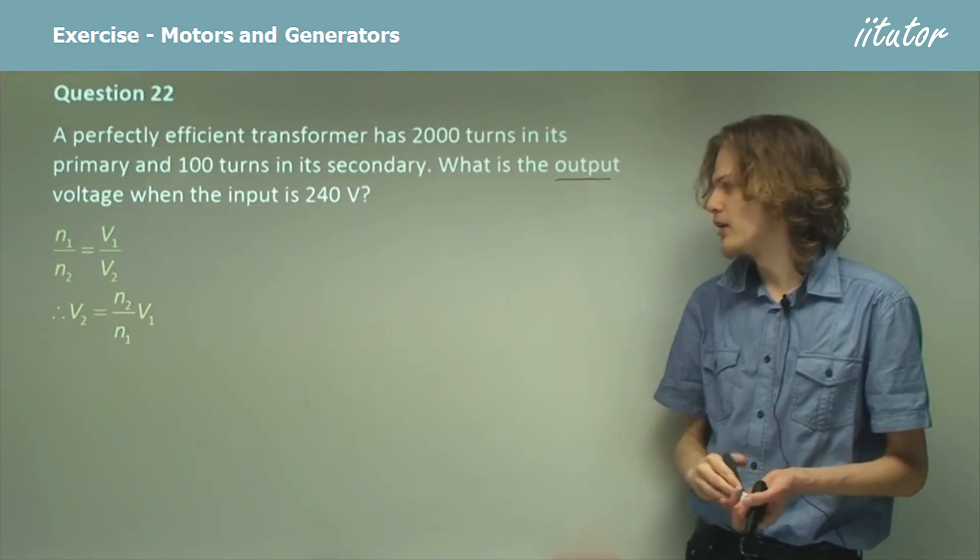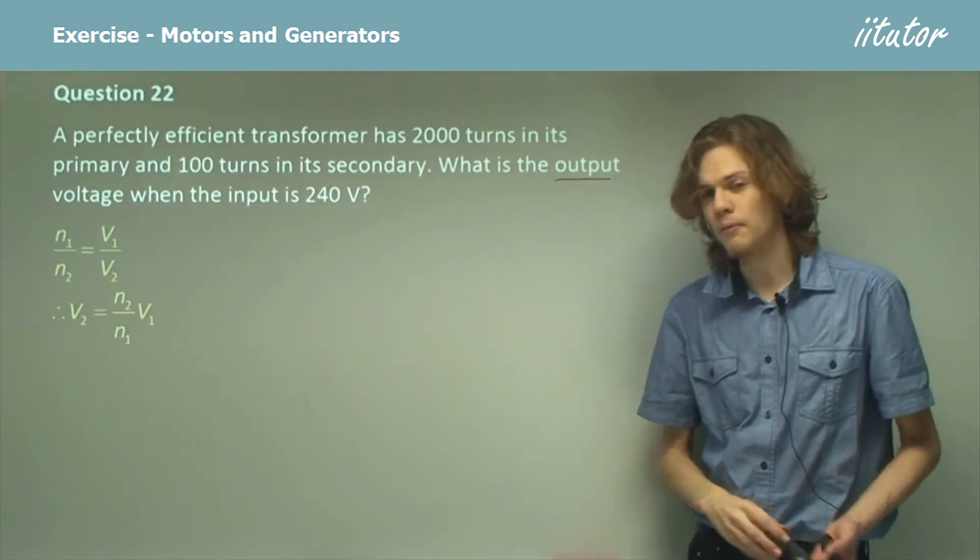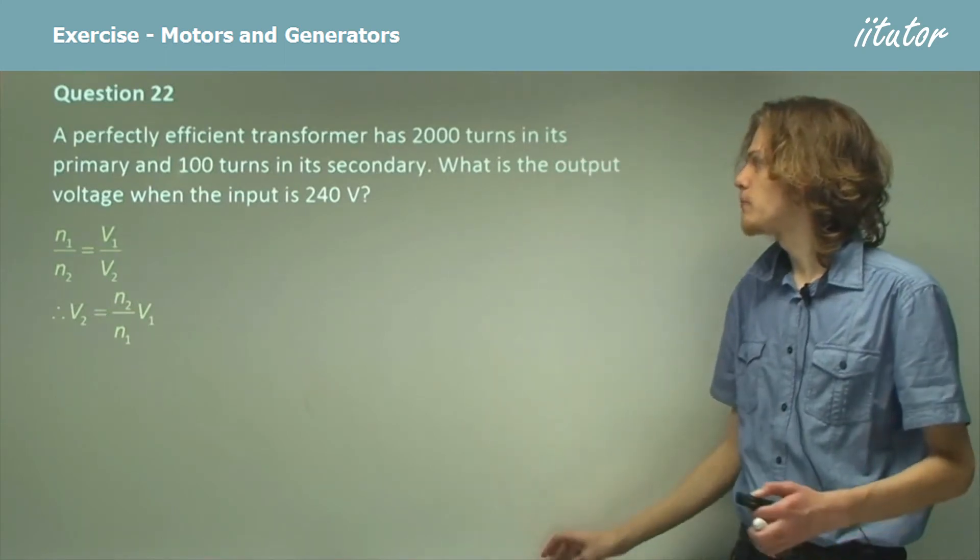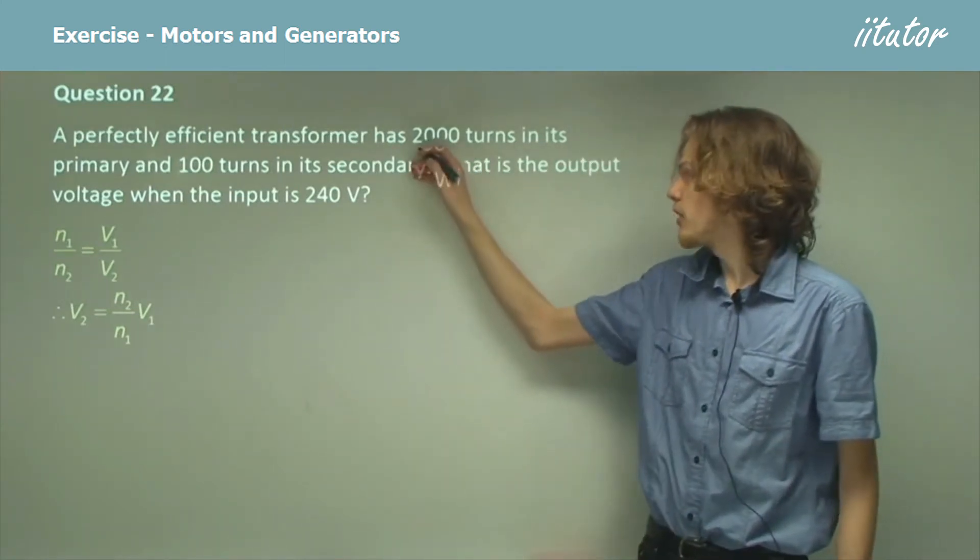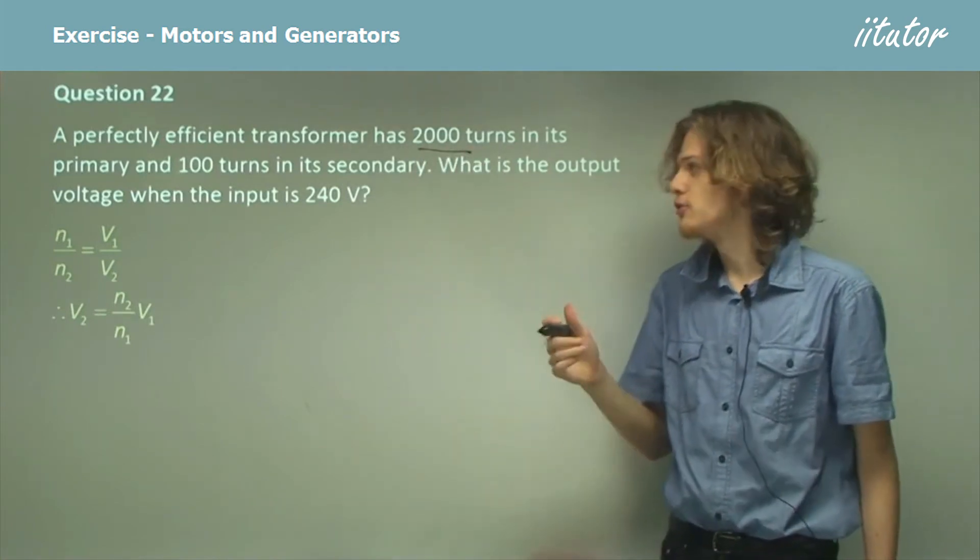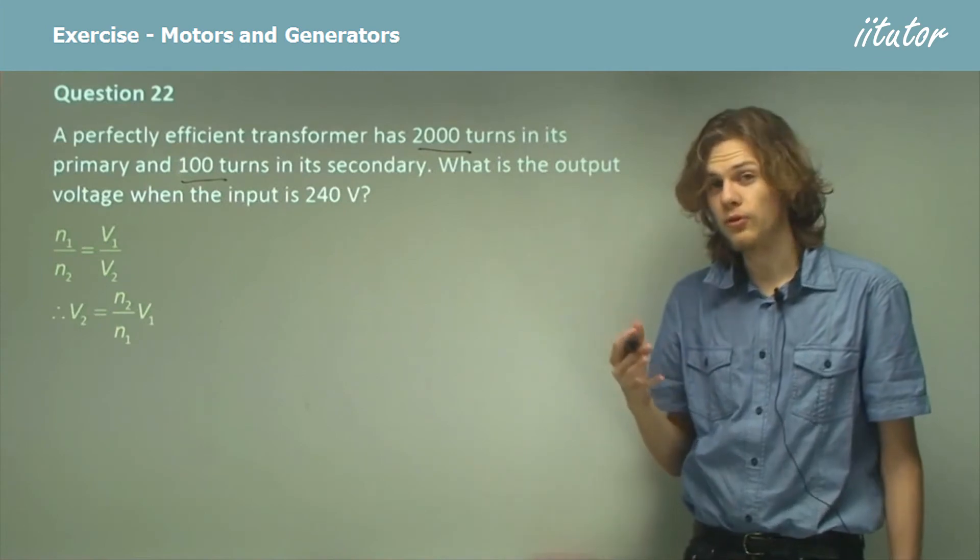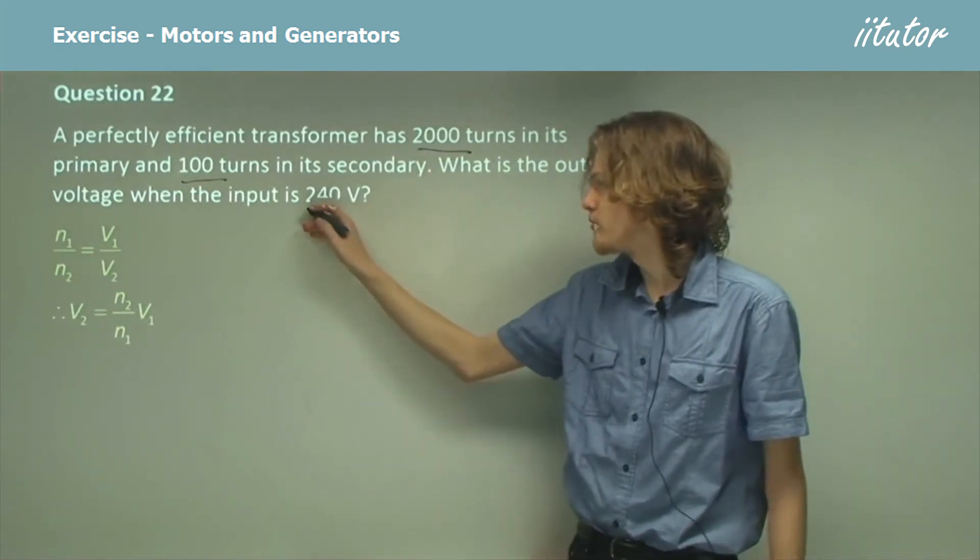And it looks something like this: V2 equals N2 over N1 times V1. So now what we need to do is substitute in our values. The primary, N1, has 2,000 turns. The secondary, N2, is 100 turns. And the input voltage, V1, is 240 volts.